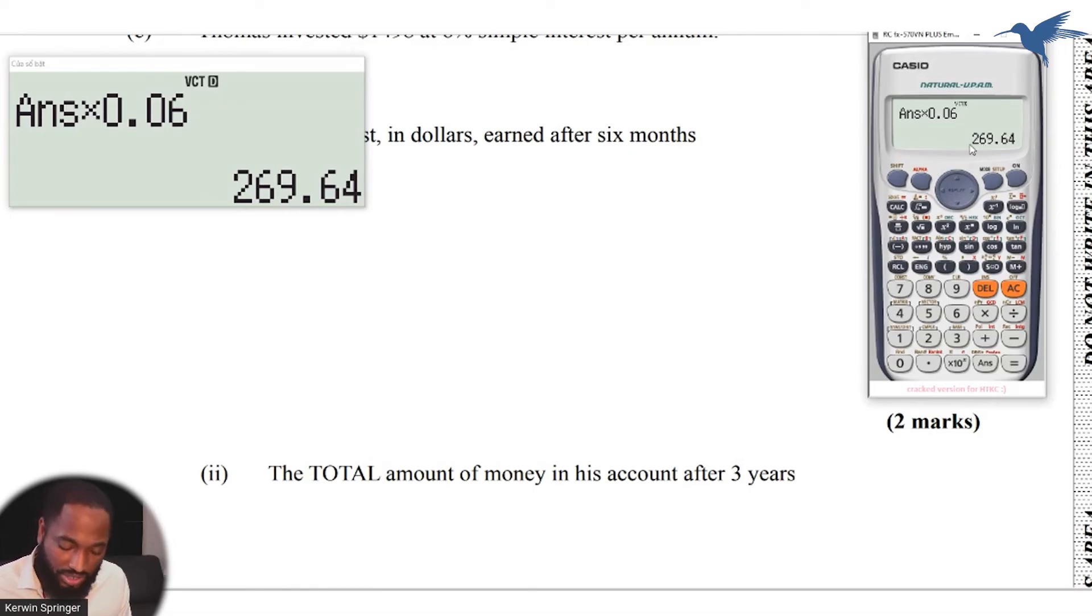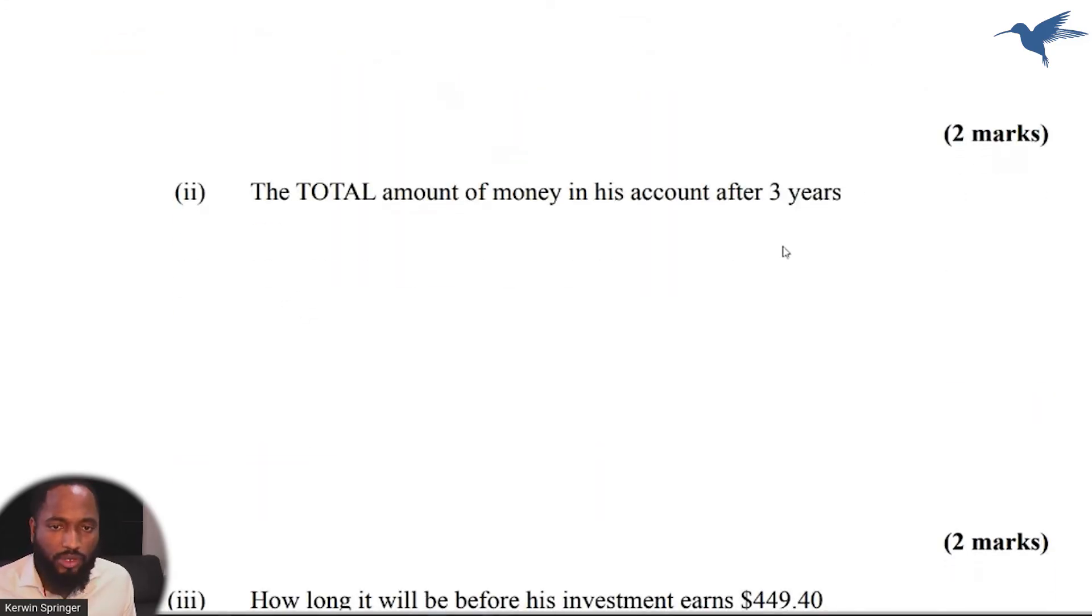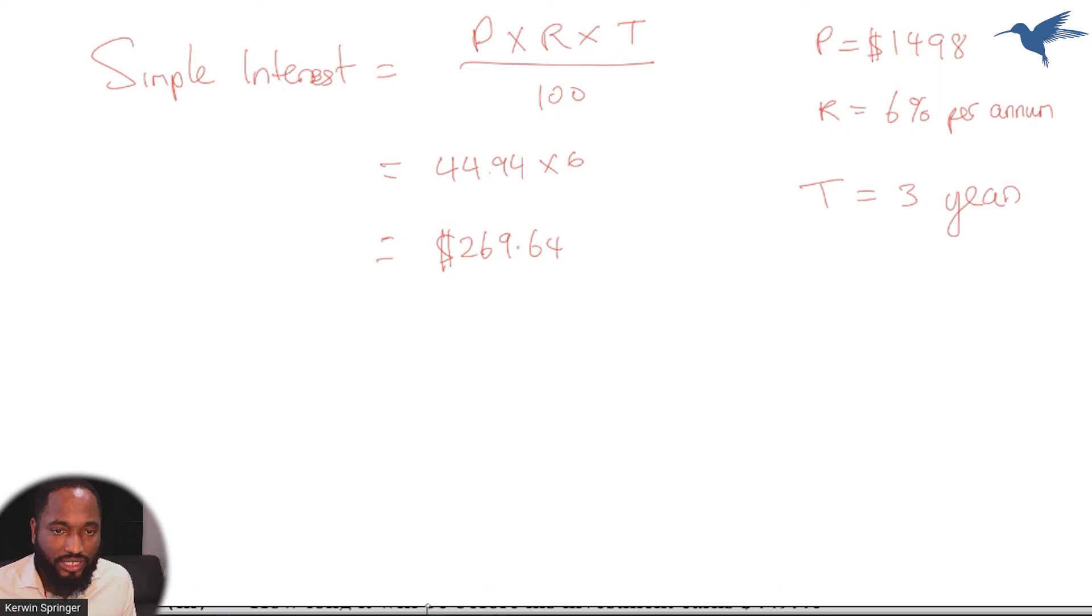So the answer is $269.64. Now is this the final answer for the question that's being asked? No, it's not, because the total amount of money in his account after three years is the interest plus the principal.